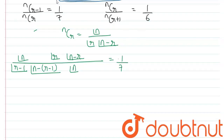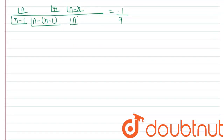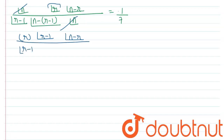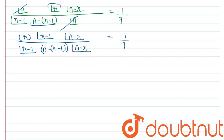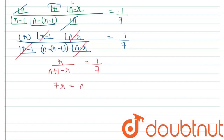Let us simplify this. The n! cancels. Write r! as r·(r−1)!, and (n−r−1)! expands as part of (n−r)! = (n−r)·(n−r−1)!. Cancelling like terms, we get r / (n+1−r) = 1/7, which gives 7r = n+1−r, or 8r = n+1.